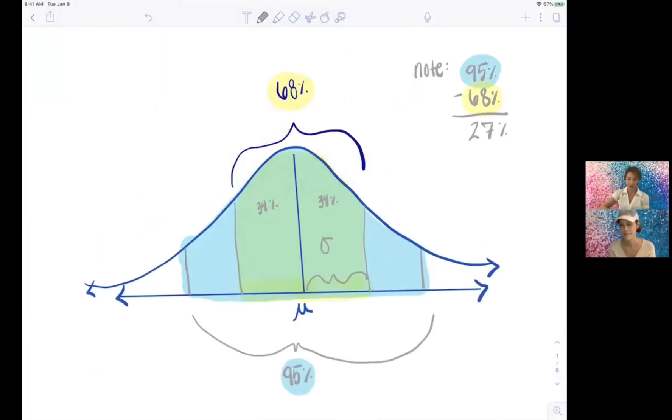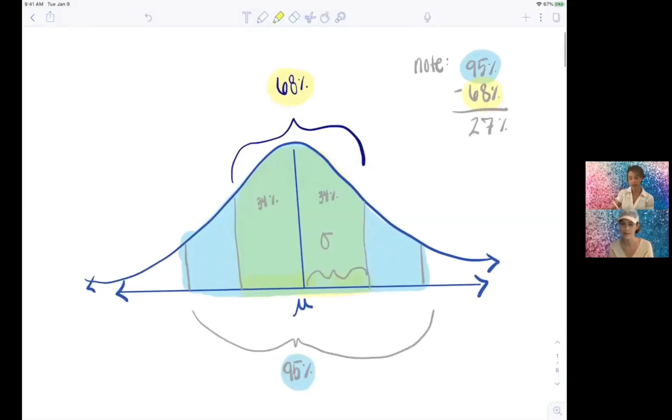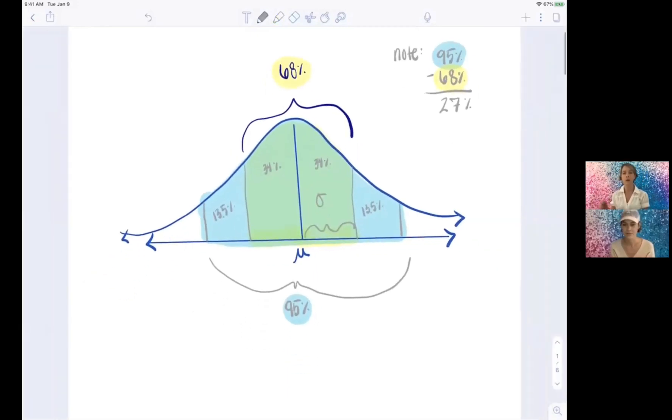Which means that each region there is 13.5 percent. Yeah, 27 percent divided by 2 would be 13.5 percent. Let's go one more standard deviation in both directions.